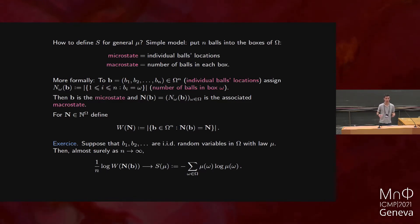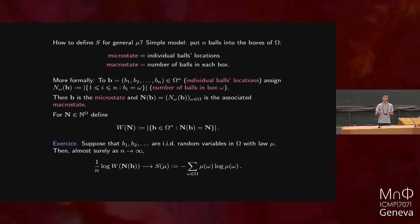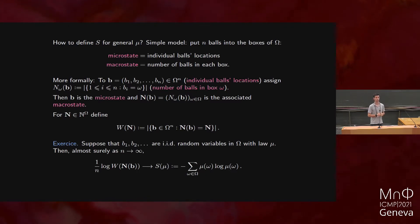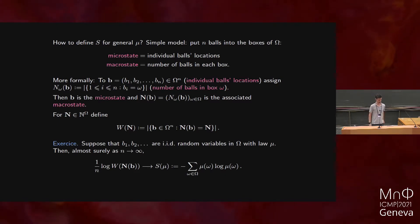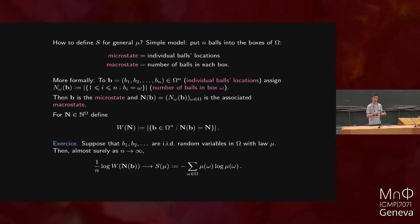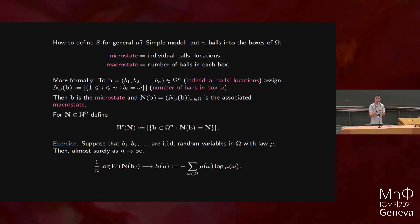Imagine this configuration space omega, which is a finite set, consists of boxes. You start taking out balls — these balls are ordered. You have ball number one and you put it in one of the boxes, then ball number two in another box, and so on with n balls. The microstate would be the full information of where you put these balls — where is ball one, ball two, up to ball n. The macrostate, which is the observation of an outsider who doesn't see all the details, is just how many balls you have in each box.